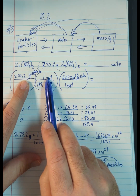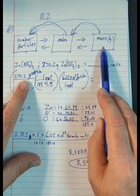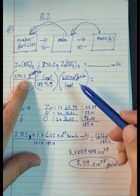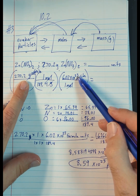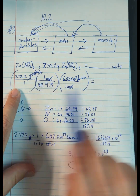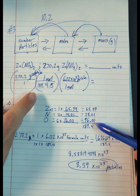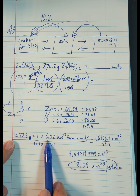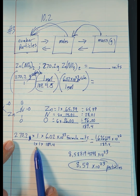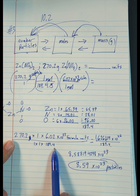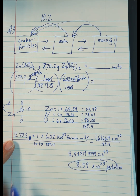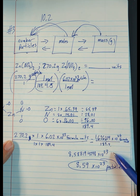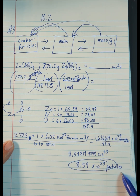Grams cancel out and we're left with moles. Our next step is to convert from moles to the number of particles. We put moles on the bottom so they cancel out, and we put the number of particles on top. Remember, one mole is always 6.02 times 10 to the 23rd particles. We multiply across the top and bottom. The molar mass of zinc nitrate is 189.4 g/mol. So we get 270.2 times 6.02 times 10 to the 23rd formula units, divided by 189.4. We divide and get 8.59 times 10 to the 23rd formula units.